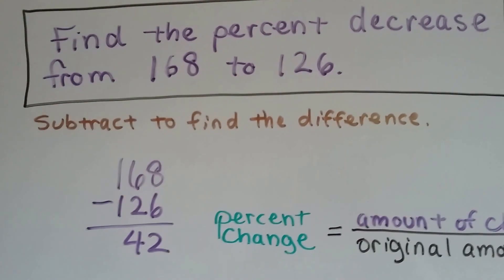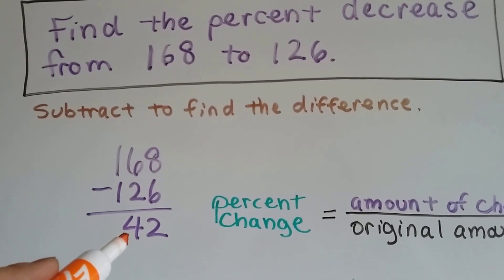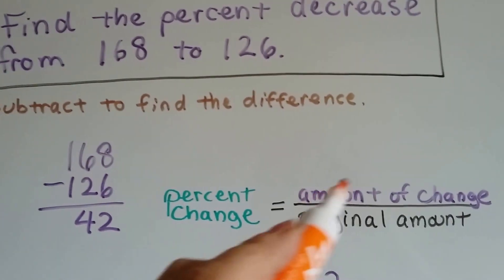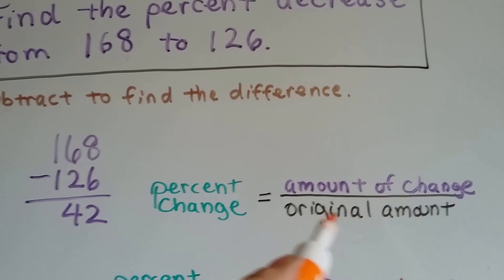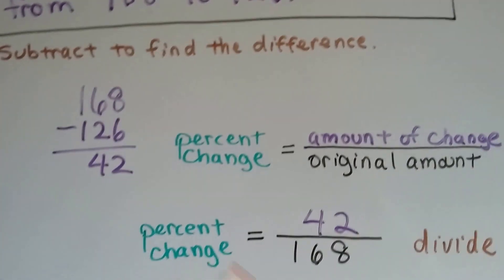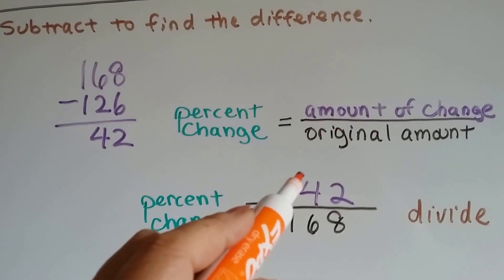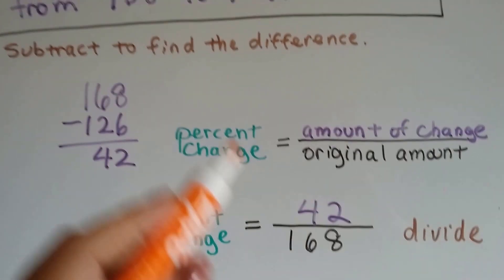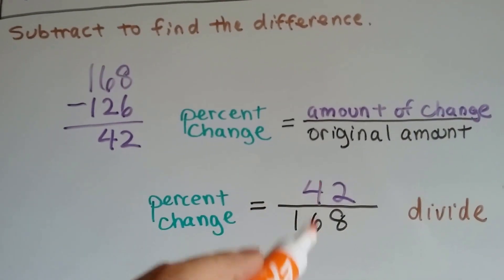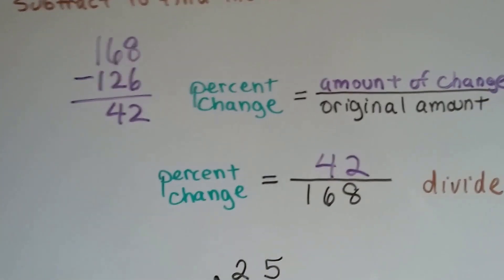Subtract to find the difference. .168 minus .126 is .042. The percent change is the amount of change over the original amount. So we plug this .042 in as the amount of change. Here's our original amount, the .168. We divide, and that's going to give us the percent change.